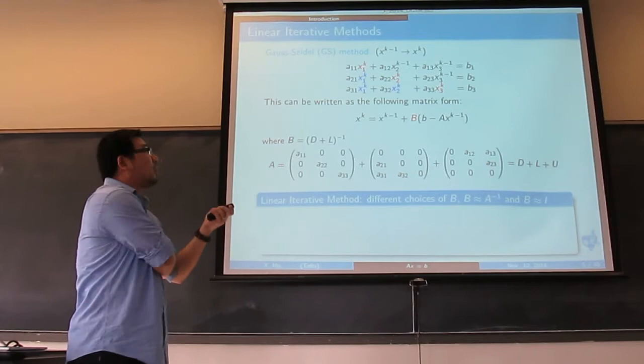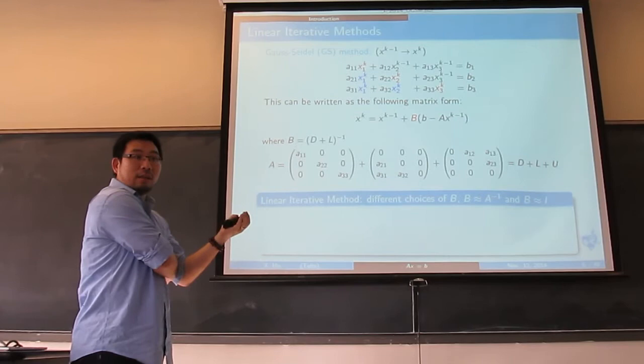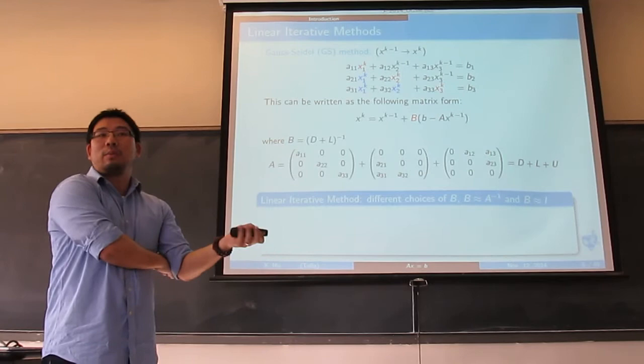Now here is a contradiction. I want B approximately equal to A inverse. Because if B is A inverse, after one step I'm done. You plug in A inverse — A inverse cancels with A, x_{k-1} cancels with x_{k-1}, and what you have is A inverse b. That's the solution. So if B is just A inverse, you solve the problem.